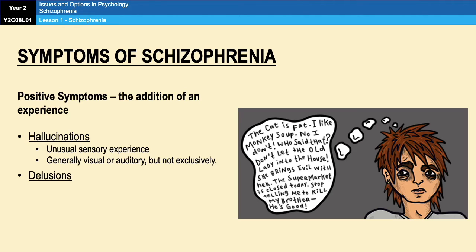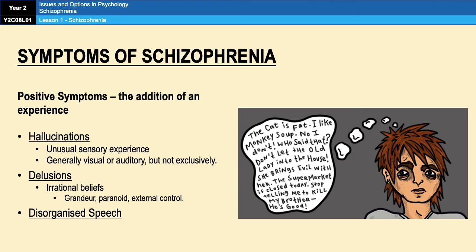Another positive symptom is delusions — irrational beliefs that come in a variety of forms. A very common one is the belief that you are an important historical, political, or religious figure, like Jesus or Napoleon; these are called delusions of grandeur. People also experience paranoid delusions, which involve beliefs about persecution — that people are watching you, chasing you, or out to get you. Another type is delusions of control, where people believe part or all of them is being controlled by an external source. A final positive symptom is disorganized speech, characterized by an inability to string together coherent sentences, or by changing topics mid-sentence. An example of disorganized speech is shown in the picture on the screen.